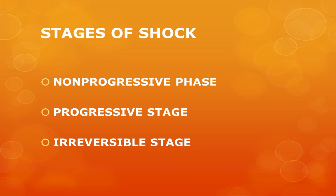These compensatory mechanisms are nature's way of providing temporary compensation so the underlying cause can be corrected. If the underlying cause is not corrected, these mechanisms will fail and shock will progress to the progressive stage. In progressive shock, there is widespread tissue hypoxia, decreased oxygen delivery, and decreased delivery of nutrients. Intracellular aerobic respiration is replaced by anaerobic glycolysis, causing excessive production of lactic acid, resulting in lactic acidosis.